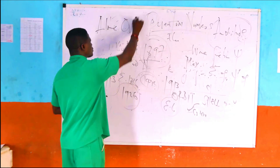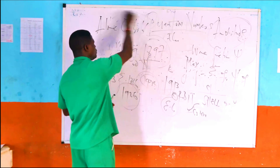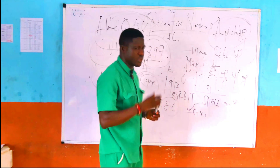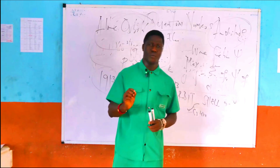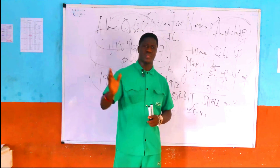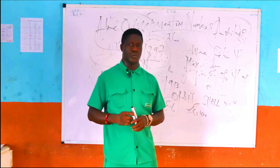So if you are asked, what is an atomic orbital? An atomic orbital is simply a region in space around the nucleus of the atom where there is a maximum probability of finding an electron. To reiterate: an atomic orbital is defined as a region in space around the nucleus of the atom where there is a maximum probability of finding an electron.